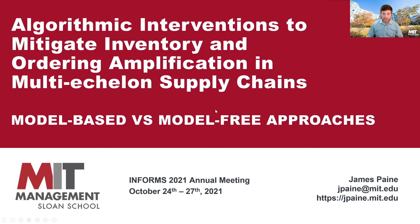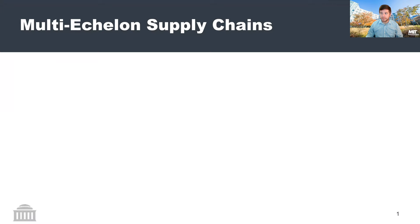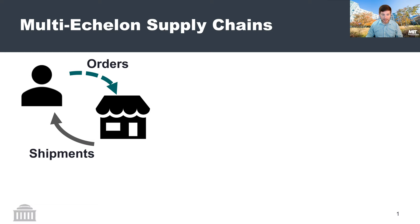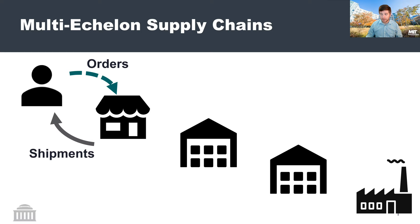When I talk about a multi-echelon supply chain, I'm referring to a system in which some sort of customer gives an order signal to a retailer. That retailer may in turn send an order signal to their own suppliers, who in turn have their own suppliers, and each of these entities in turn supply some sort of shipment based upon the orders they received.